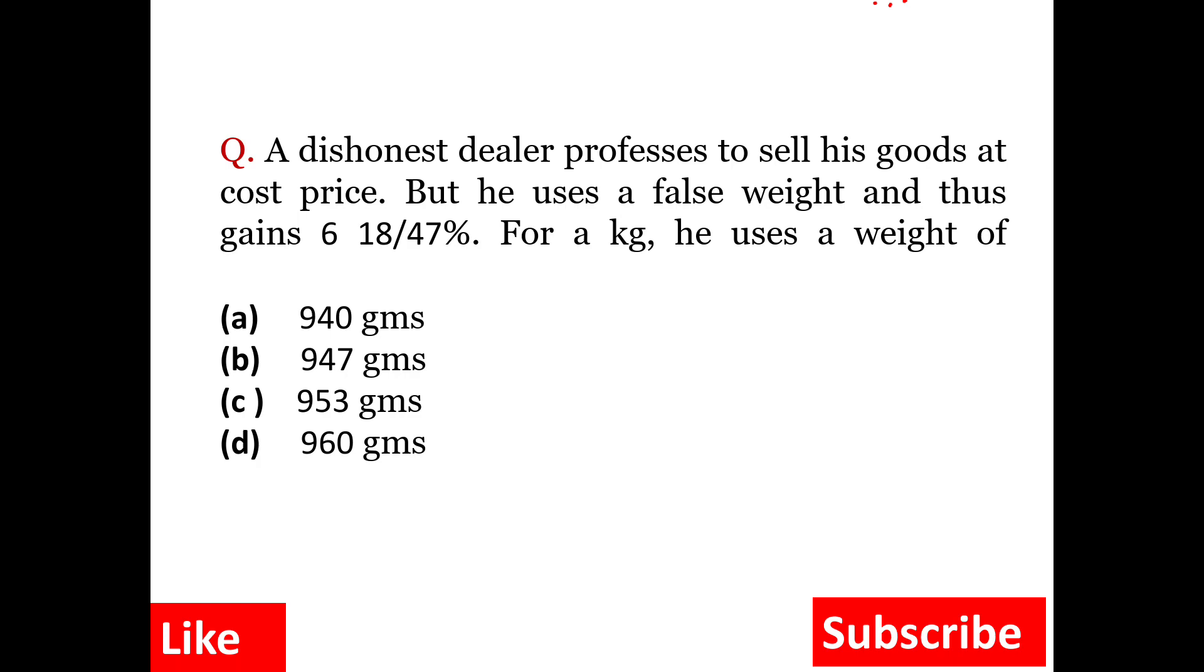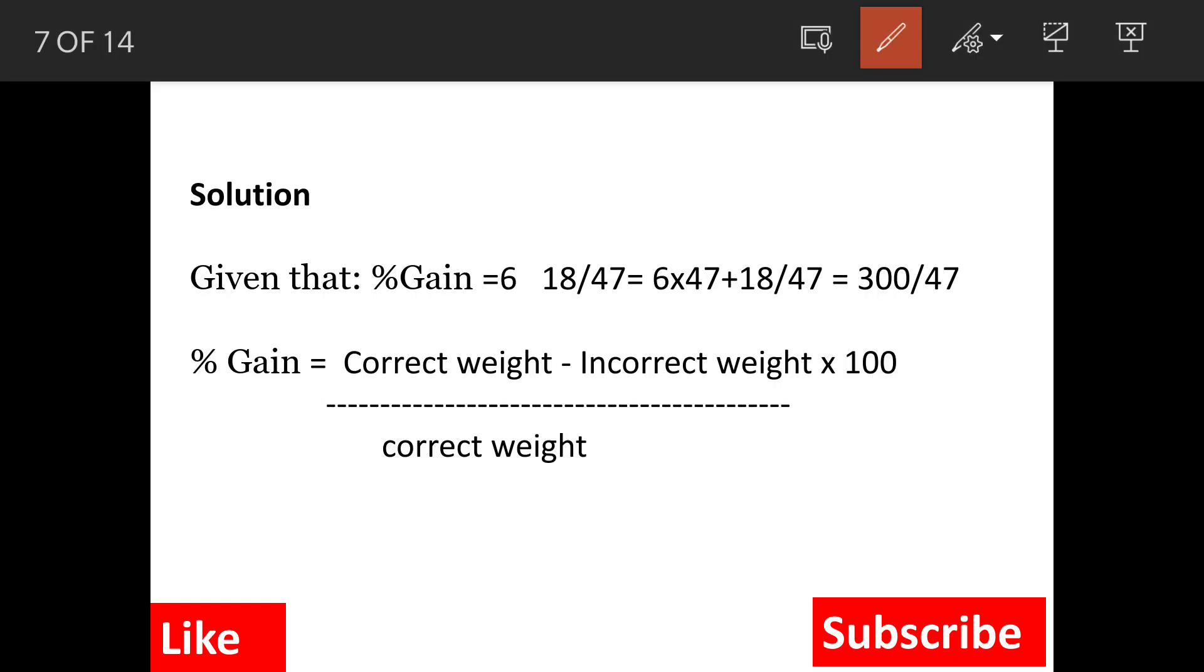Now how will we solve? First of all, percentage gain: 6 18 by 47 is equal to 6 plus 18 by 47. So we solve this and we get the gain as 300 by 47. We will not simplify this, otherwise calculations will become very difficult.